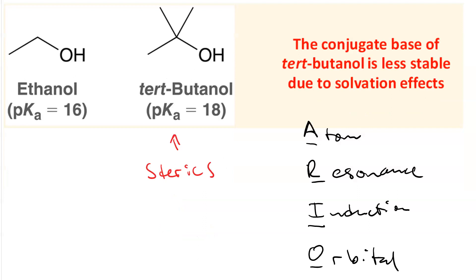And then the O in ARIO stands for orbital. However, O is never a factor when we're comparing two different alcohols because the oxygen atom in an alcohol is always sp3 hybridized. So we can ignore the O when we're comparing two alcohols. We can ignore the O in ARIO.